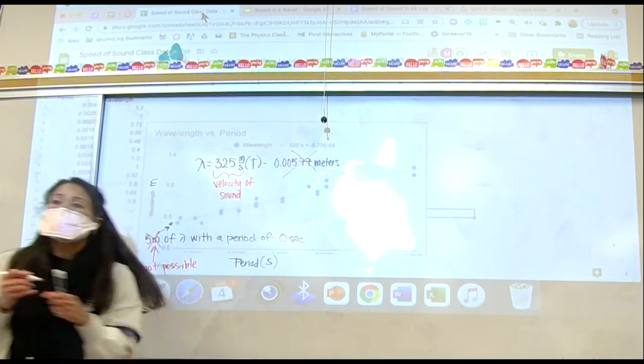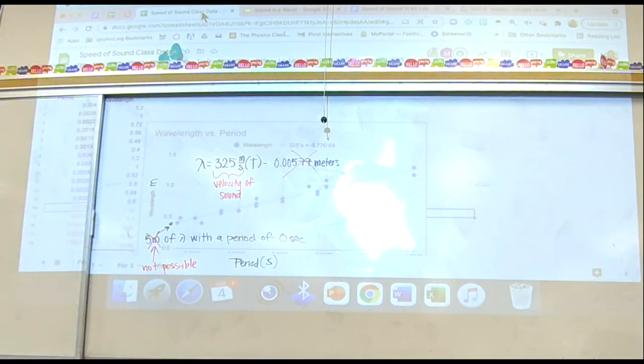And then obviously, you should have noticed that because this is a meters per second value, this is a velocity, and it is specifically the velocity of sound. Question, Alex? Yeah, good. Really good point. Alex suggested add 0,0 as part of your data, and because you know conceptually that it makes more sense that way, it'll make your data even more accurate in terms of the slope. So that's a good point. Any questions on this?